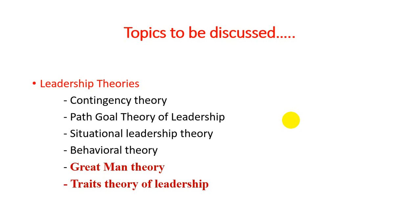We discussed that there are four types of situational leadership styles: telling, selling, participating, and delegating. We also mentioned that beside these four styles, there are four levels of maturity of employees, because not all employees have the same level of maturity, competency, confidence, and commitment. The leader must first study the maturity level of the employees.